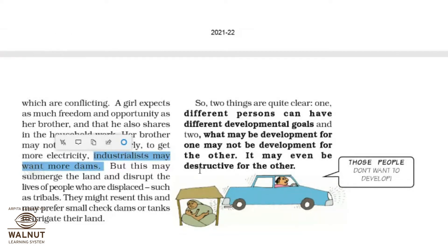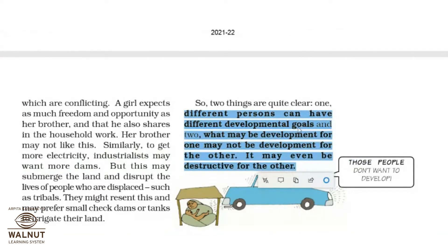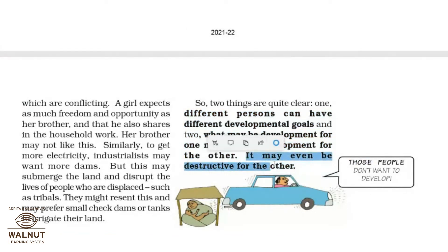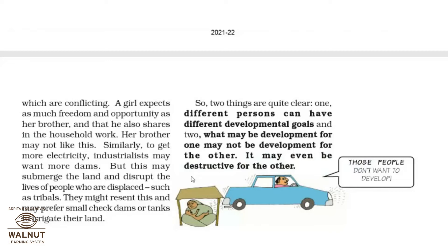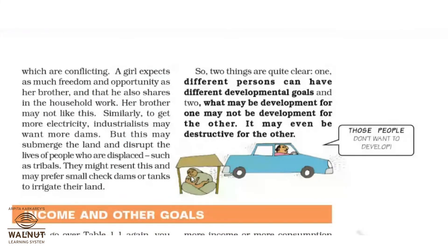Different persons can have different developmental goals, and what may be development for one may not be development for another — it may even be destructive for others. If you lose your land and are asked to relocate, your life gets disrupted and your children's education gets disrupted. So development for one can be destructive for another.